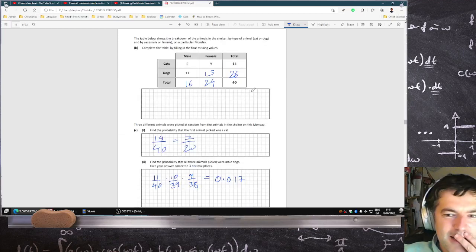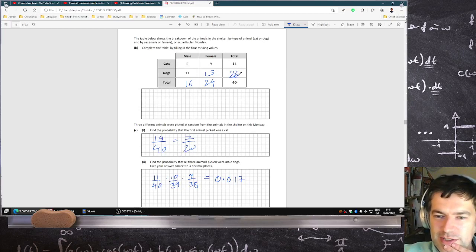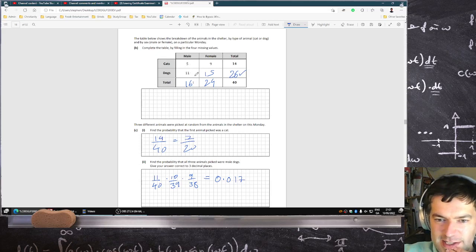This one here was to complete the table. All you have to do is pick the number to make sure it totals 40. So I chose 26, and then 5 and 11 has to be 16. And then 11 plus what makes 26.